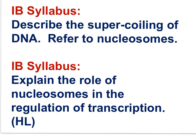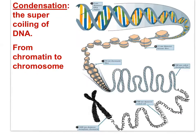Let's move on to two new IB syllabus statements: describe the supercoiling of DNA and refer to nucleosomes; explain the role of nucleosomes in the regulation of transcription. While we sometimes use the terms DNA and chromosome interchangeably, a chromosome is technically defined as DNA wrapped around protein. If you research the term chromosome, the image that appears shows an X-shaped structure representing DNA that has undergone replication, displaying sister chromatids — genetically identical chromatids — and it has condensed to become visible.